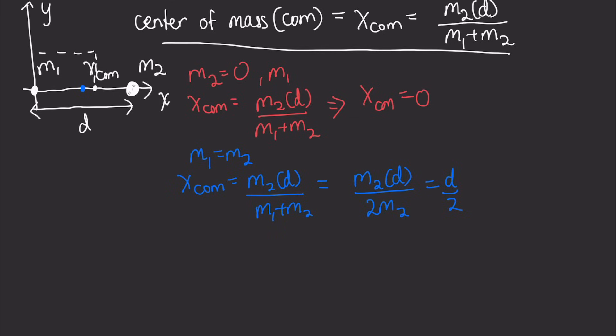So for a more generalized situation, we define the center of mass as x-center of mass equals M1 times x1 plus M2 times x2 divided by M1 plus M2. And for the problem above, for M1, x1 would just equal 0, and x2 would be D.